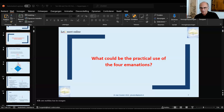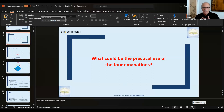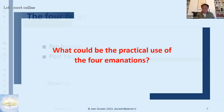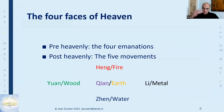What could be the practical use of the four emanations? It is a theoretical subject. The four emanations are an idea from the I Ching. When you see the first hexagram of heaven, you see that it starts with Yuan, Heng, Li, Zhen — those are the Chinese characters. They are called the four virtues, the four faces, the five movements. They have many names. The name 'emanations' is actually not mentioned in the Yi Jing — it's my invention.